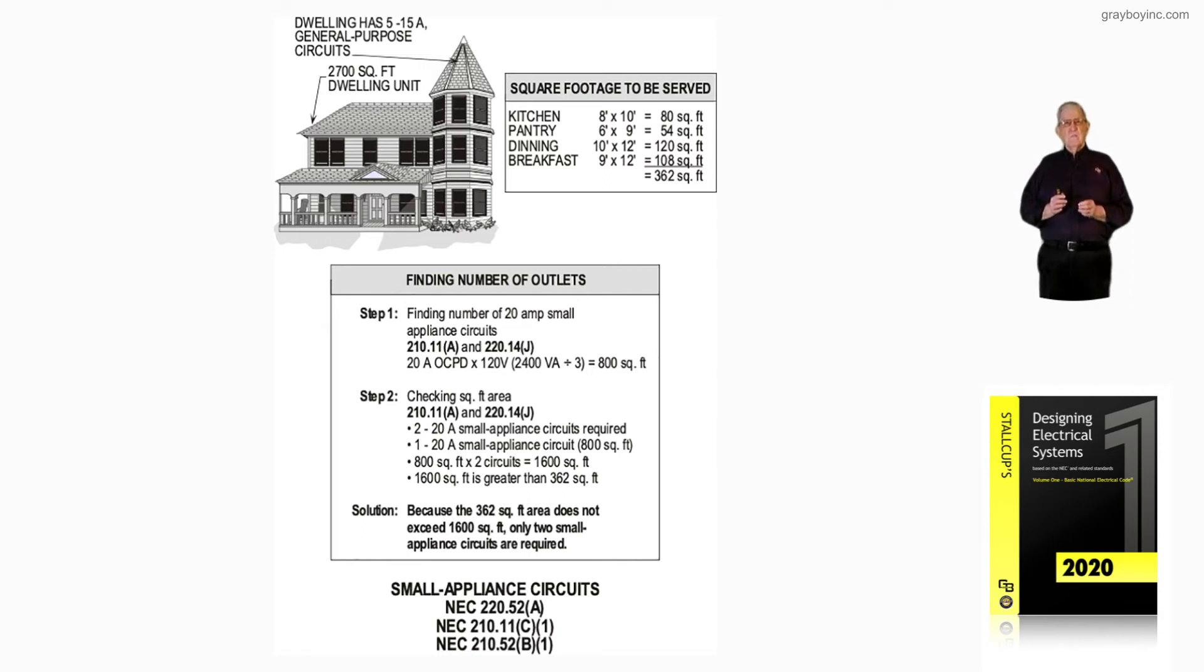basically is 2400VA, when you do your math. You divide that by the 3VA per square foot of 220.14j, you come up with 800 square foot.